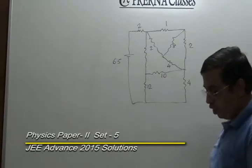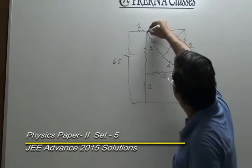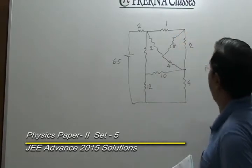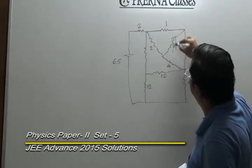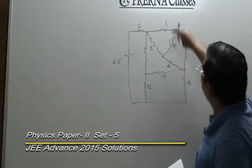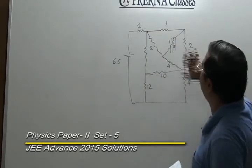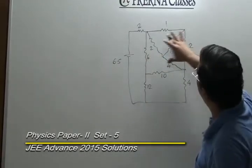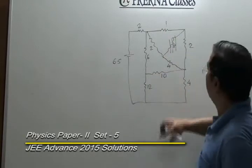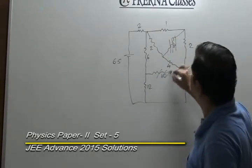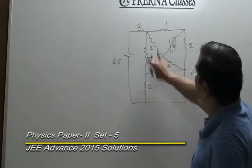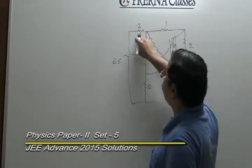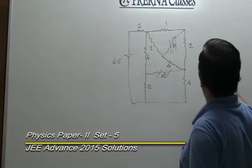The fifth question involves a resistor network. Observing between two nodes, the ratios 1:2 and 2:4 are the same, making it a balanced Wheatstone network, so that middle resistance can be ignored. This gives 3 and 6 in parallel, equaling 2. Again, 2 and 6, and 4 and 12 form another balanced Wheatstone — ignoring that gives 6 and 18 in parallel, equivalent to 4.5. Adding 2 gives total resistance 6.5 and current of 1 A.